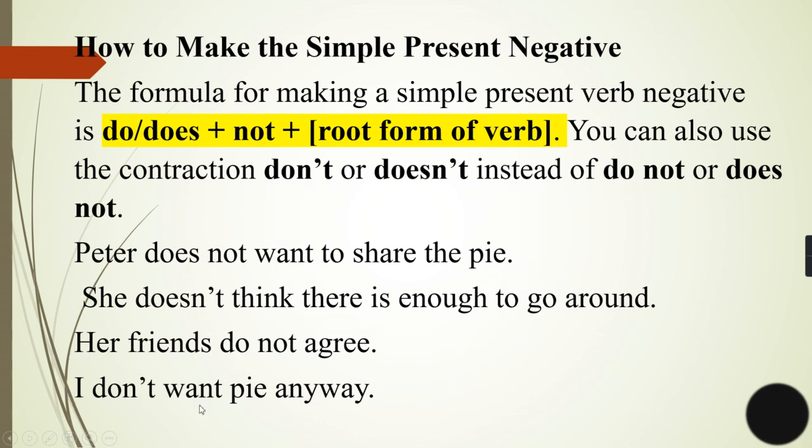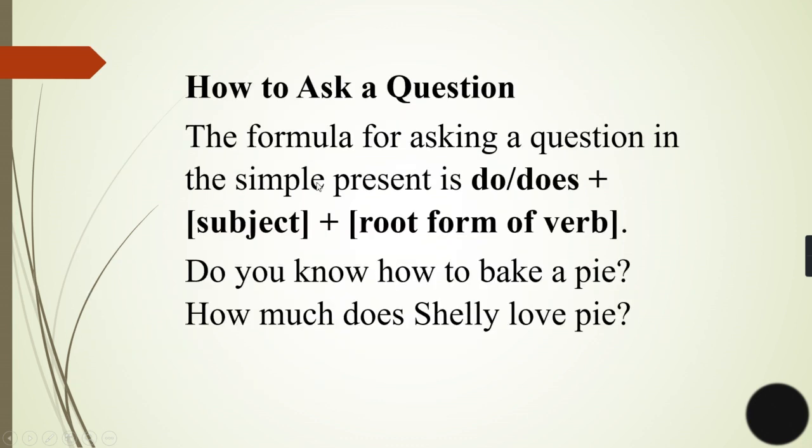Now how to ask a question? The formula for asking a question in the simple present is do or does - again, do for plural and does for singular - plus subject plus root form of the verb. For example: Do you know how to make a pie? How much does Shelley love pie? So here you have seen wh-type questions where the helping verbs help the main verb of the tense, and it is in the front. These are do or does type interrogative questions.